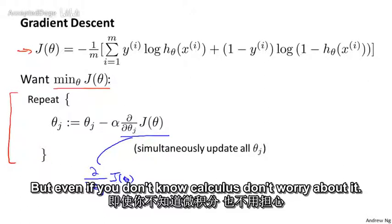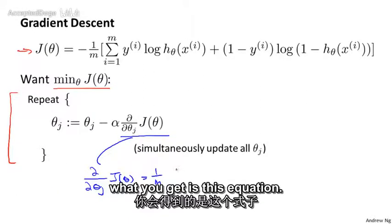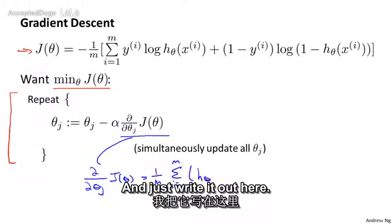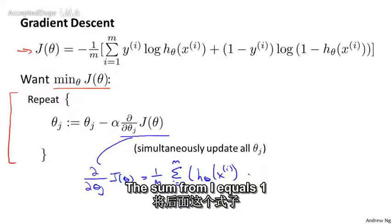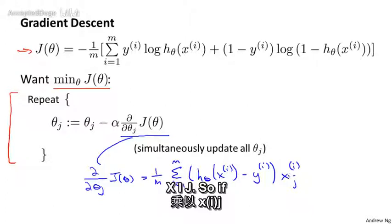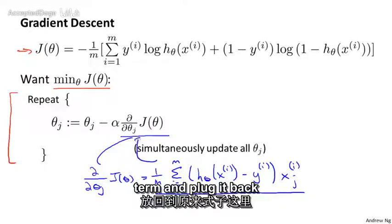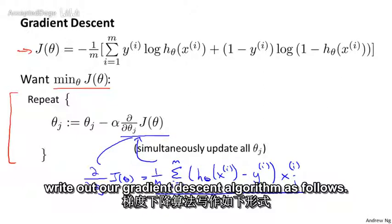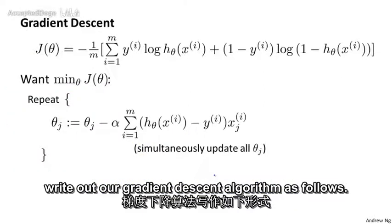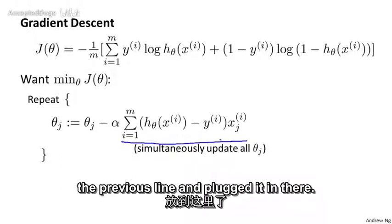But even if you don't know calculus, don't worry about it. If you actually compute this, what you get is this equation. And I just write it out here. It's sum from i equals 1 through m of essentially the error times x_ij. So if you take this partial derivative term and plug it back in here, we can then write out our gradient descent algorithm as follows.